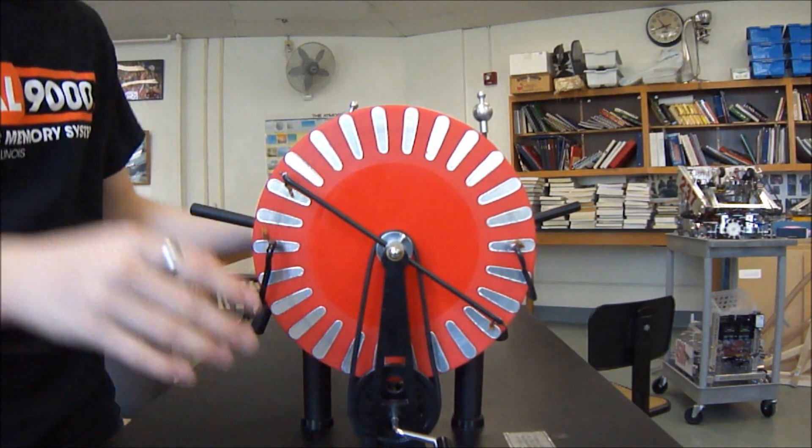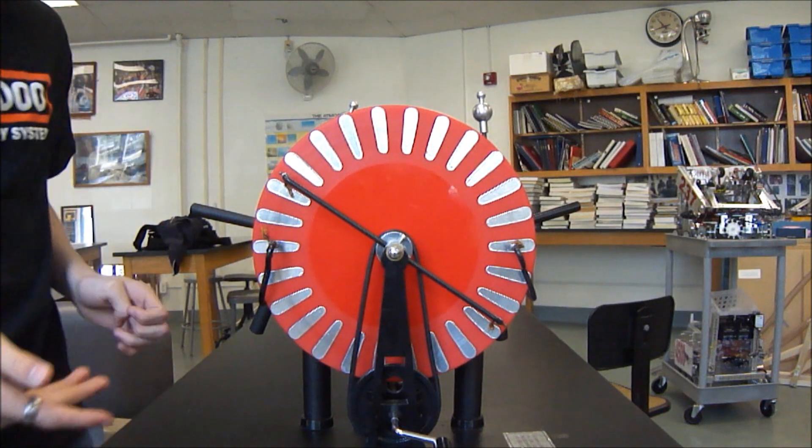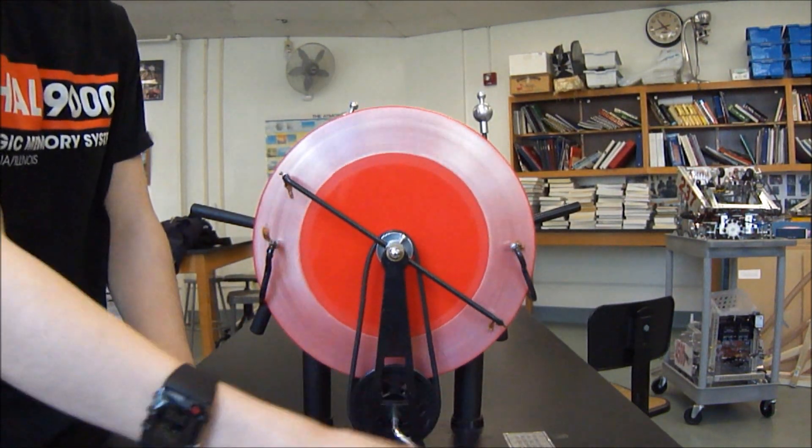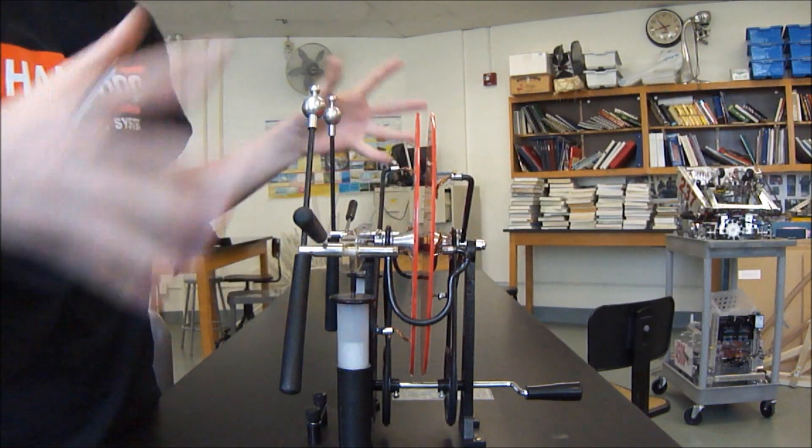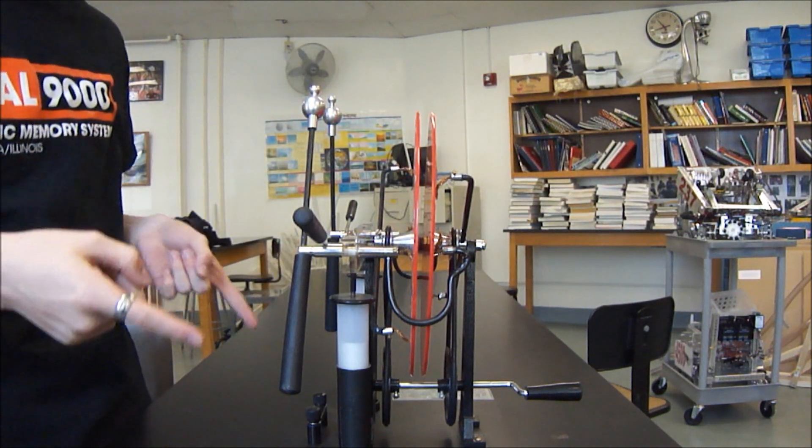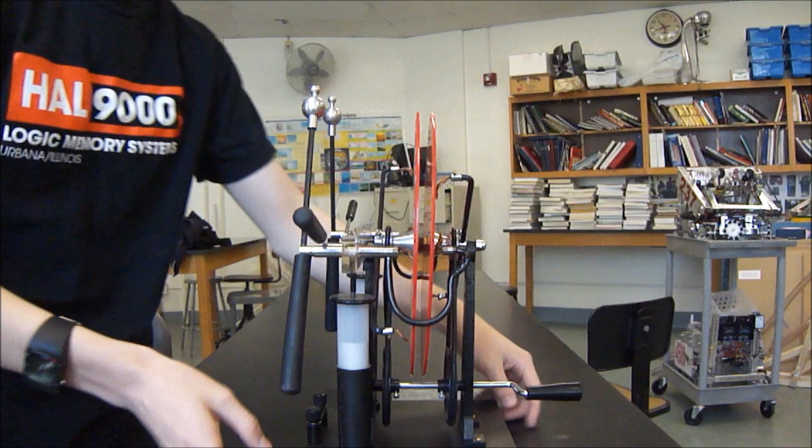So what we have here is a basic flywheel electrostatic generator that works by spinning two wheels in opposite directions to create a voltage difference to allow current to arc.